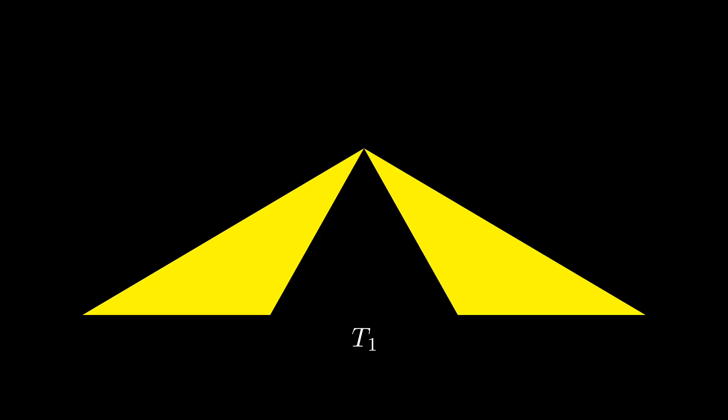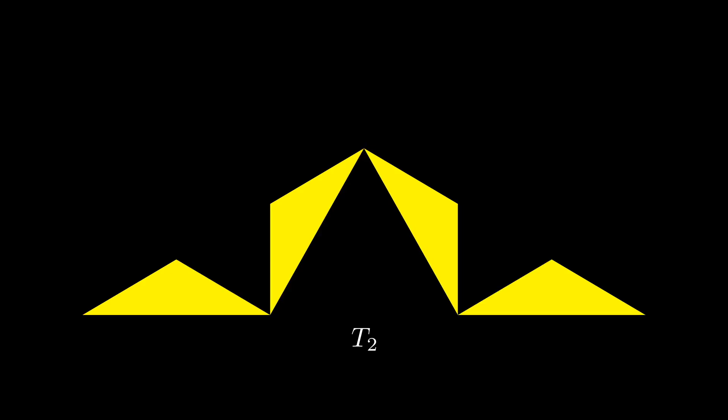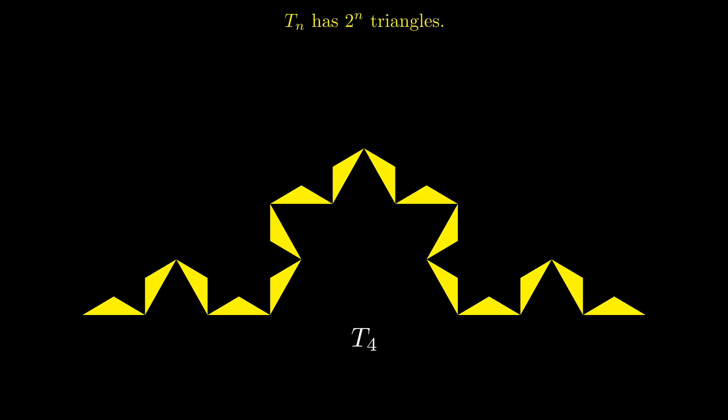Now the process is repeated indefinitely. At each iteration, each isosceles triangle is divided into three pieces, and then the equilateral triangle is removed, so the number of triangles will double. Notice also how the polygonal lines from the Koch construction appear along the bottom boundary of the sets Tn.